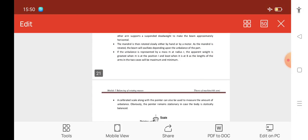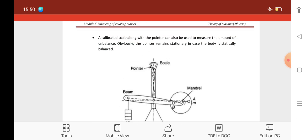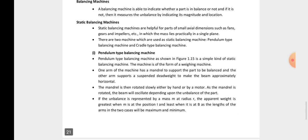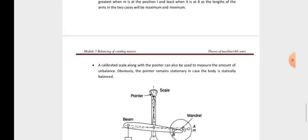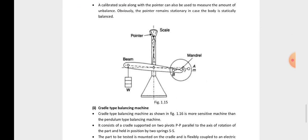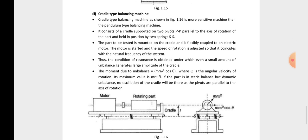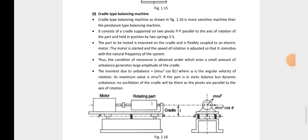In summary for static balancing: in the pendulum type, if the scale pointer is vertical and stationary, the system is statically balanced; if it shows a reading, there is unbalance. In the cradle type, cradle deflection represents the unbalance condition. If resonance occurs, maximum amplitude is reached, causing a harmful effect on the system and potential damage.